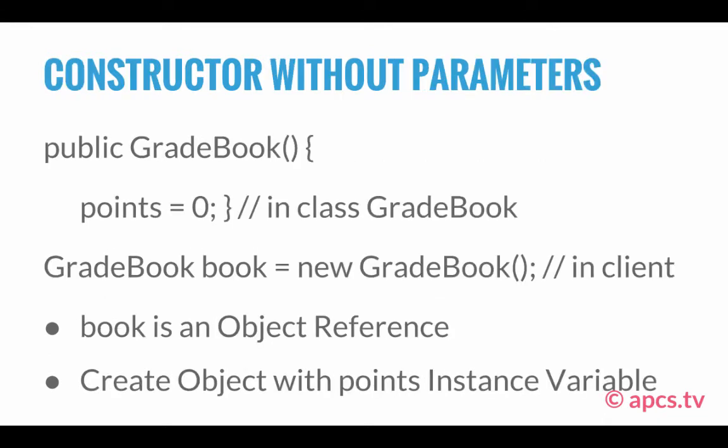Here is a constructor without parameters. Let's say we have the GradeBook class, and the GradeBook class has an instance variable: private int points semicolon. Within this class, we have the public GradeBook() method. We know this is a constructor method because it has the same name as the class. The class's name is GradeBook and similarly the method's name is GradeBook. The parentheses indicate that it's a method. Looking at the body, we have a simple statement which sets the value of the private instance variable points to zero.